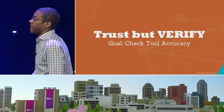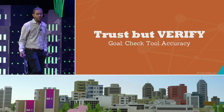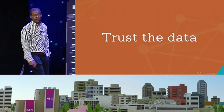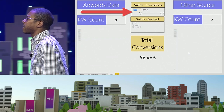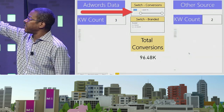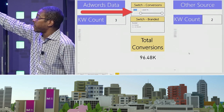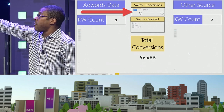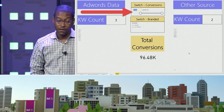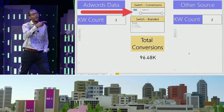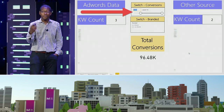Trust but verify — I don't believe tools anymore, and I'm going to show you why with data. I'm not going to name the source. I took all my search terms from paid that converted between 10,000 and my max number of conversions, counted up how many words there are in my list versus this other keyword corpus — they're missing one. Not bad, especially because my unique words could include misspellings and other stems. But it's 96,000 conversions — so missing one could be a big deal.